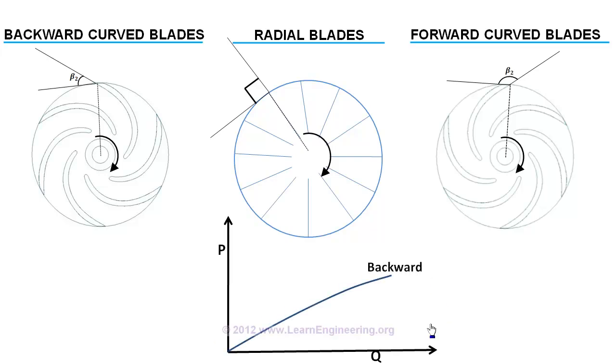In radial blades, since pressure does not have any connection with flow rate, power consumption increases linearly.